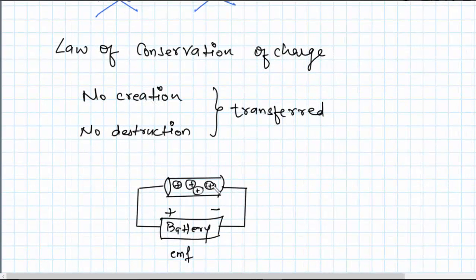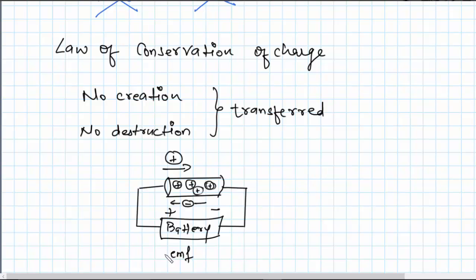When a conducting wire is connected to the battery, charges are compelled to move. Positive charges move in one direction and negative charges in the other. All positive charges move from left to right, and all negative charges from right to left. This motion of charges creates electric current. By convention, the direction of current is the same as the direction of positive charges, so current flows from left to right — opposite to the direction of electrons.